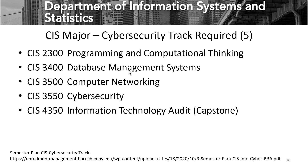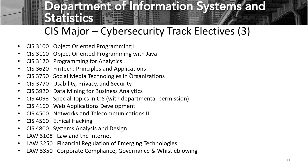Our third track is the cybersecurity track. The five required courses are Programming and Computational Thinking, Database Management Systems, Computer Networking, Cybersecurity, and the capstone Information Technology Audit. The list of electives for cybersecurity is more focused and includes courses such as usability, privacy, and security, ethical hacking, as well as a choice of one law course, such as Law on the Internet, Financial Regulation, or Compliance Governance and Whistleblowing.